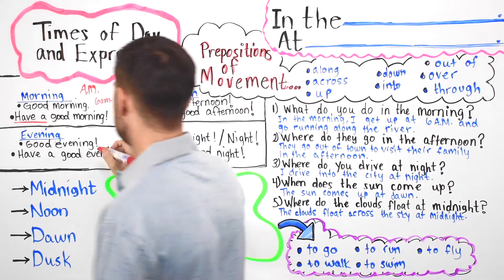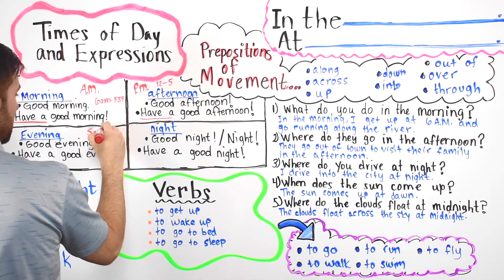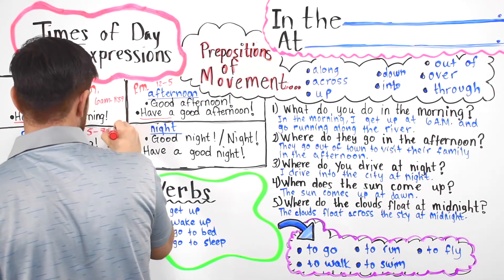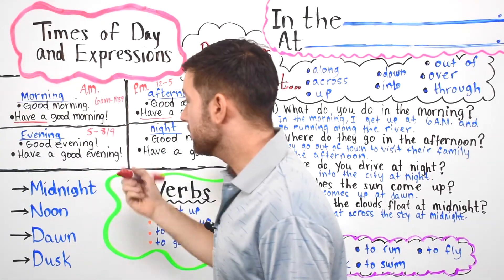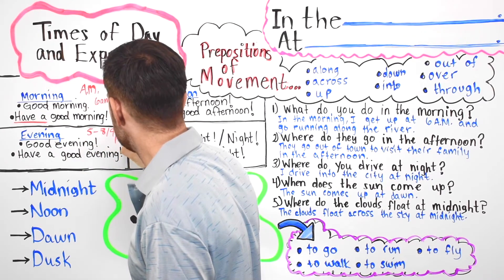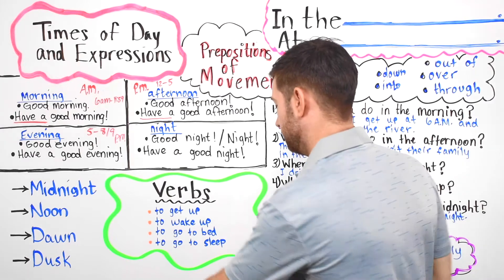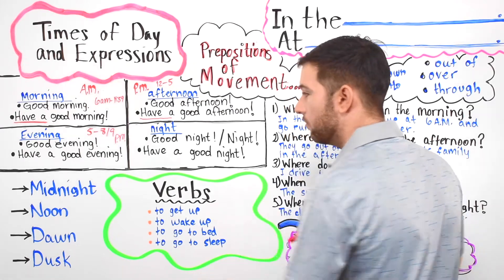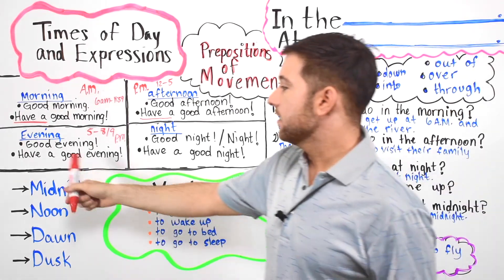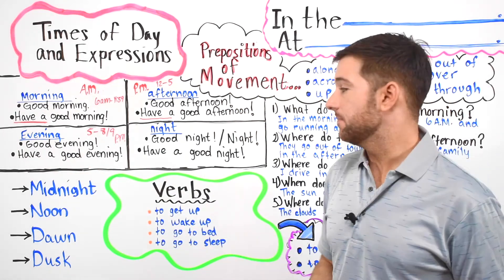Next you have evening, and evening is usually from 5 to about 8 or 9 o'clock. This is also p.m. You could say 'good evening' — hi, good evening, how are you? And then to say goodbye, you say 'have a good evening.' That's it.